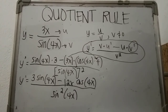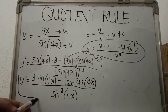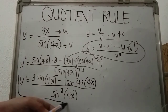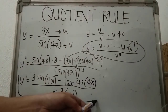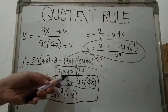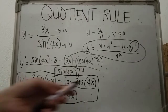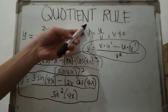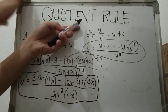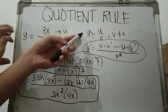At this point, this is our final answer: 3 sine 4x minus 12x cosine 4x over sine squared 4x, because we don't have anything to cancel with the denominator.